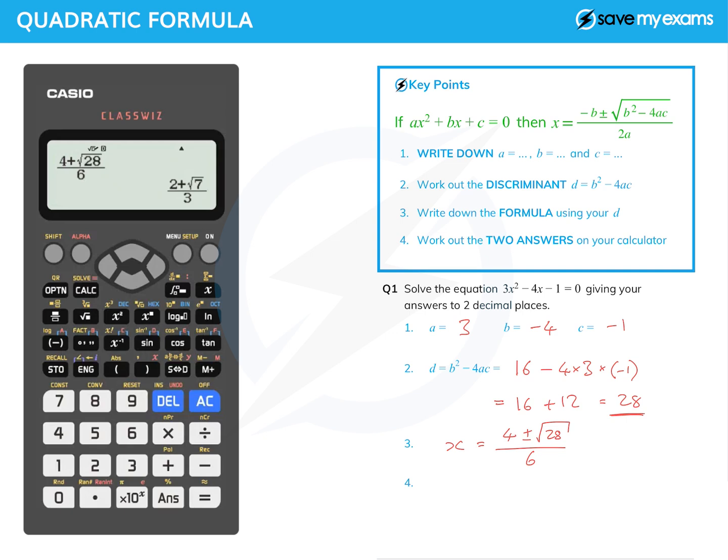But the button just above the delete button, S to D, turns it from that form into a decimal form, and there it is. And so we can see that x is equal to, well, 1.548 something. Look at the third decimal place, 8, and so we round up the second one. So that's 1.55.